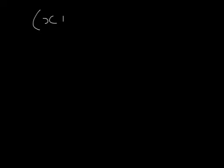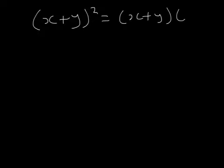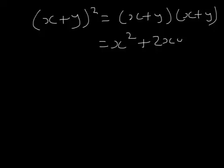Let's think about x plus y to the power of 2. That means x plus y times x plus y. x times x is x squared. y times x and y times x — they're the same, so that's two of those. And then y times y is y squared.